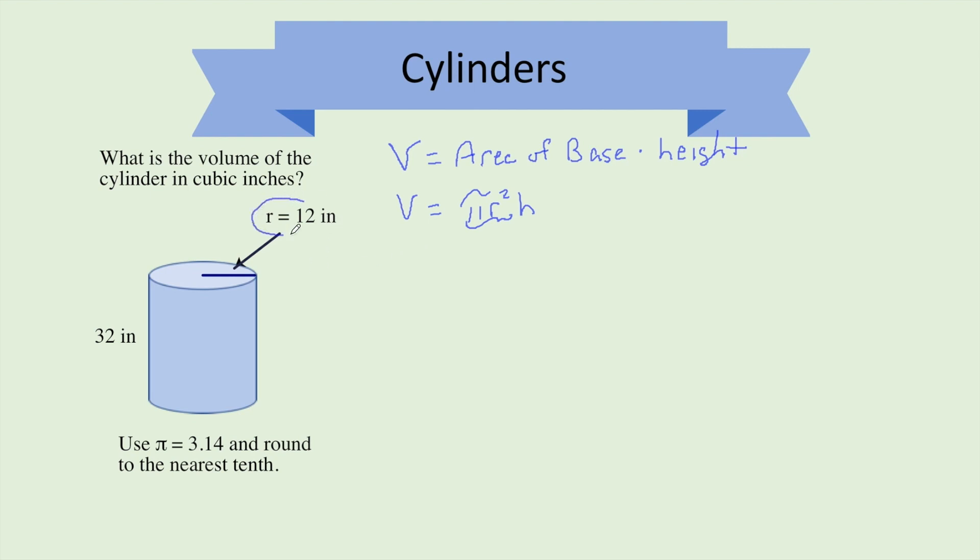So our radius is 12. We've got to make sure we're using the radius. So we're going to put in 3.14. Directions say use 3.14 times the radius. 12 squared times the height, which is 32. First thing you want to do is square that radius. Now we're just going to take this, put it right into our calculator.